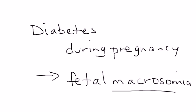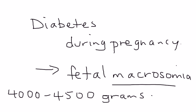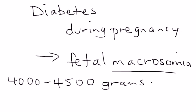What does fetal macrosomia mean? Fetal macrosomia is referring to a heavy baby — you're looking at a birth weight of about 4,000 to 4,500 grams. If this does happen directly because of the gestational diabetes, during the delivery, in particular vaginal delivery, it can lead to something known as shoulder dystocia.